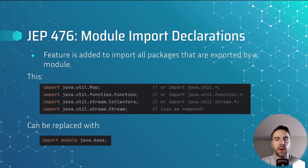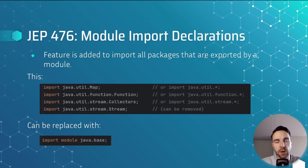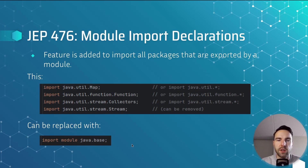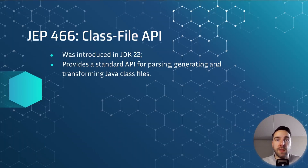With this JEP they added a feature to import all packages exported by a module. Many classes like List, Map, Stream, and Path are often used but not automatically imported, which can result in wildcard import statements not always in line with coding guidelines. So instead of individually importing all these classes, you can now replace it with 'import module java.base', which will import all 54 packages exported by the java.base module.